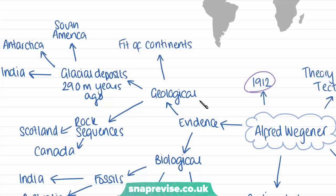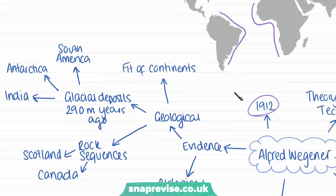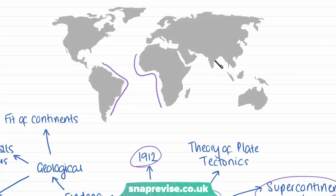Some of the geological evidence he proposed was the fit of the continents. He noticed that the coast of South America looked like it fits into the side of the coast of West Africa — almost like a jigsaw puzzle. The other geological evidence is that there are glacial deposits made 290 million years ago that are found in South America, Antarctica, and India. If these glacial deposits were all made at the same time, how did they end up in such vast locations away from each other? This must mean that the continents were once together and have since split apart.